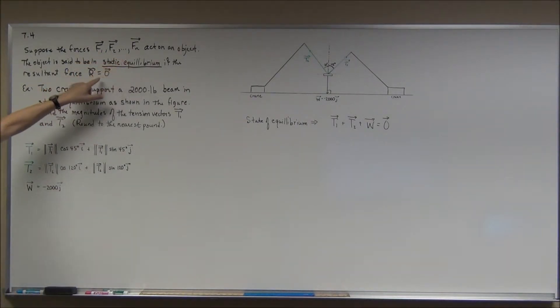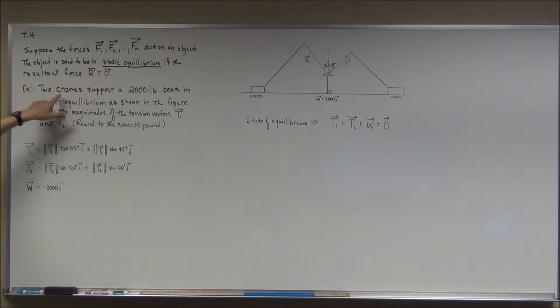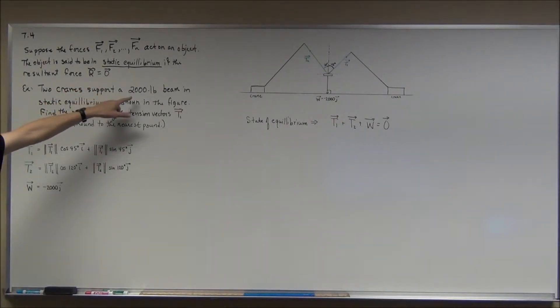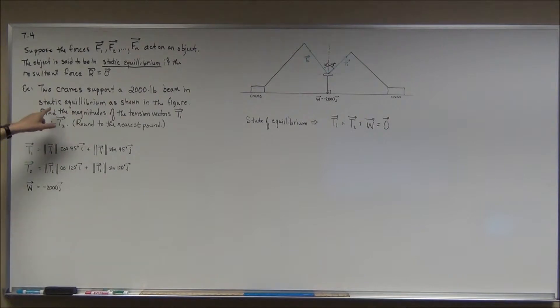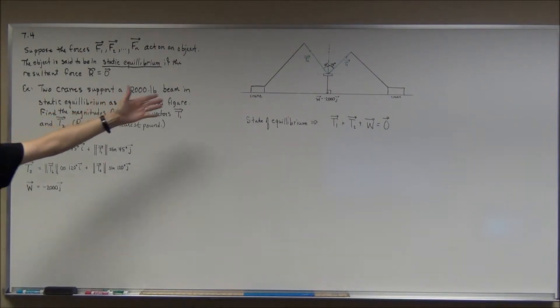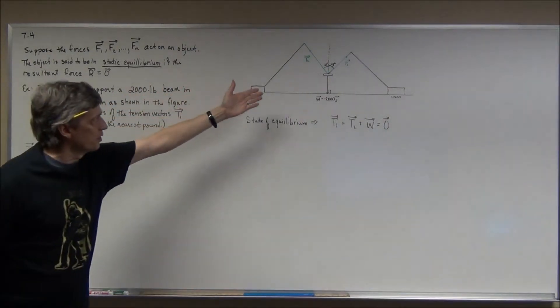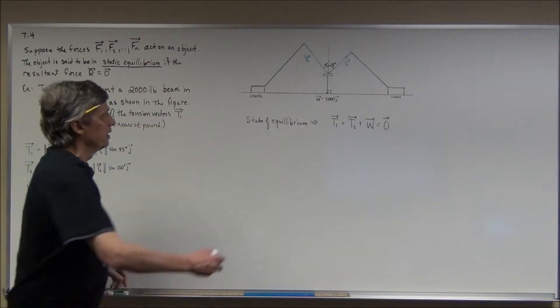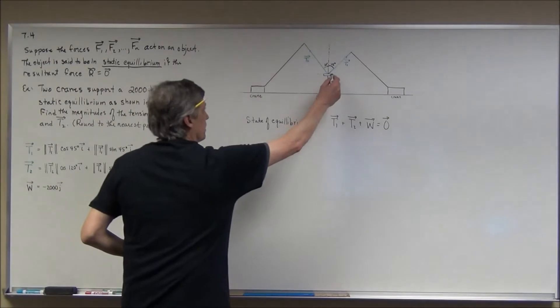is equal to the zero vector. So we have two cranes and they support a 2,000 pound beam in static equilibrium as shown in this figure. I tried to draw the figure as best I can — this little object here is the 2,000 pound beam.